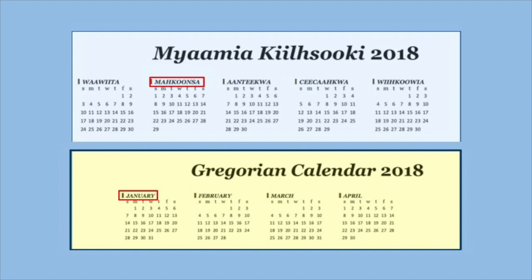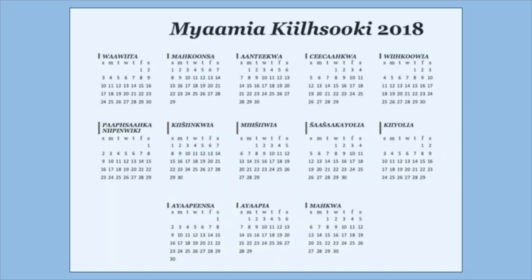As you look through your calendar, you may notice that the month names do not match those of a typical calendar you would pick up at the store. Each month is named after an ecological change occurring in our environment, from seasonal variations in temperature and weather. This feature is unique to Myaamia Kilsuke since it reflects our and our ancestors' interactions with our homelands.